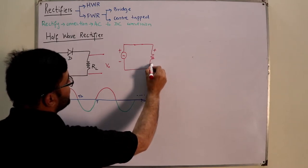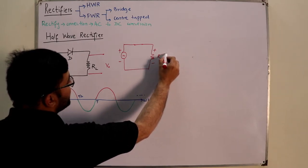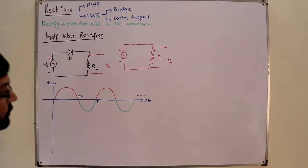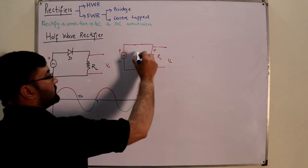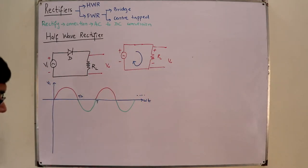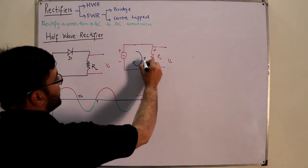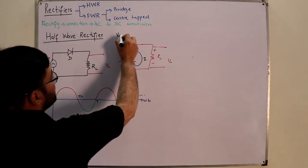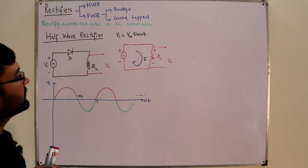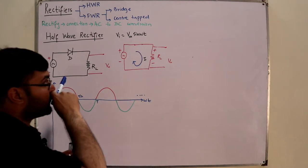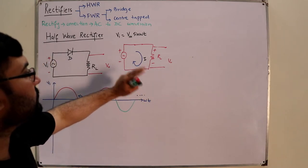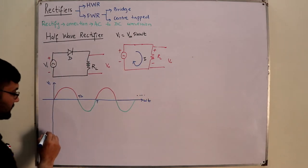With the diode as a short circuit, the output is taken across R_L with plus-minus polarity. A current flows through it following the same relation as the input: V_input = V_m sin(ωt). The current follows i_m sin(ωt), and V_input becomes equal to V_output. So in the positive half cycle, the input is directly copied to the output.